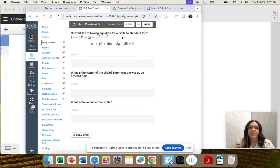Convert the following equation for a circle to standard form. So we're given general form and we want standard form, then we want the center, then we want the radius.